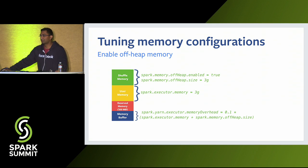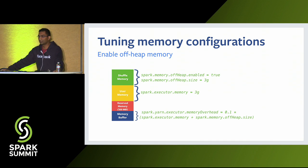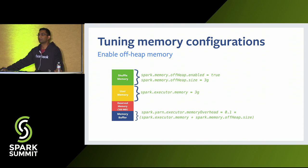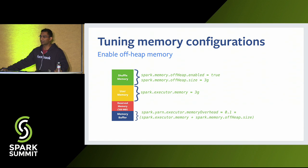Now that you have tuned your spark.memory.fraction, what else can you do to speed up your job? You can enable off-heap memory for Spark. Off-heap memory enables you to allocate the shuffle data structures in native memory outside the JVM heap, meaning they are not managed by the JVM's memory manager and are not subjected to garbage collection. By enabling shuffle off-heap memory, you avoid garbage collection overhead for the shuffle data structures, which helps speed up your job.